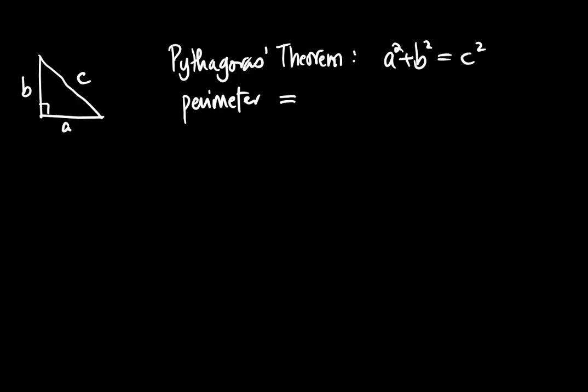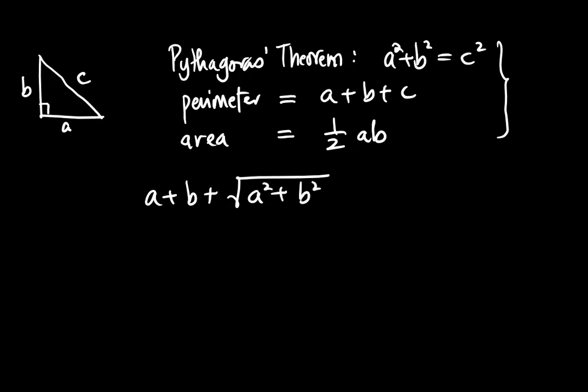Since it's a right triangle, C equals the square root of A squared plus B squared. We want the perimeter to equal the area. So, A plus B plus square root of A squared plus B squared equals 1 half times A times B.